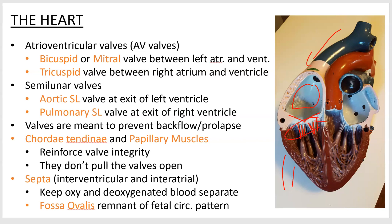The chordae tendinae are like little ropes, and the small bumps connected to them are called papillary muscles. They connect from the heart wall to the valves. It might look like they pull the valves open, but that's not the case — their job is to prevent the valves from going backwards. You don't want blood to flow back into the atria when the ventricles contract. When the ventricles contract, blood pressure rises and blood should exit through the aorta and pulmonary trunk. Valve integrity is maintained by these cables that prevent the valve from flapping back the other way.